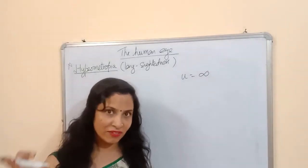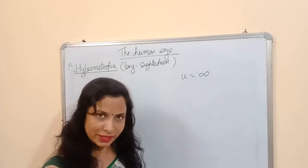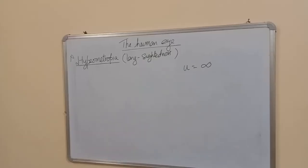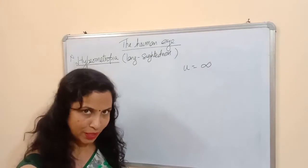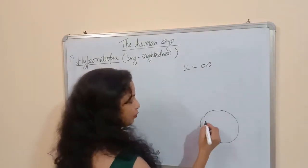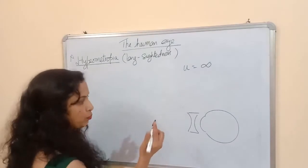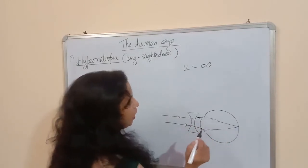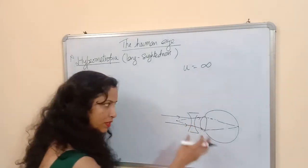This person has to see the object which is at infinity. Where should the image be formed so that they can see it clearly? The image should be formed at 80 centimeters — that is the far point of this myopic person. He wants to see the far object, so he uses a concave lens of proper focal length so that it diverges the light rays such that the object appears at the distance the person can see clearly.